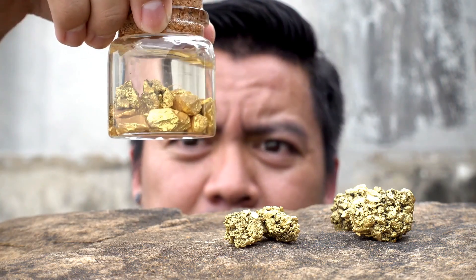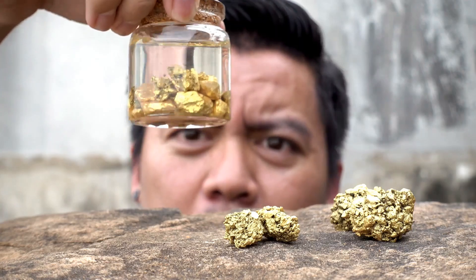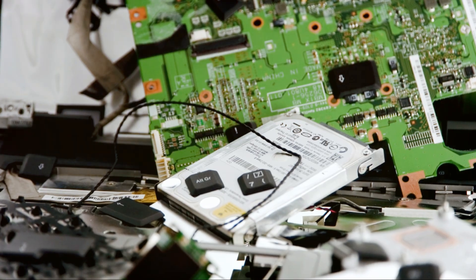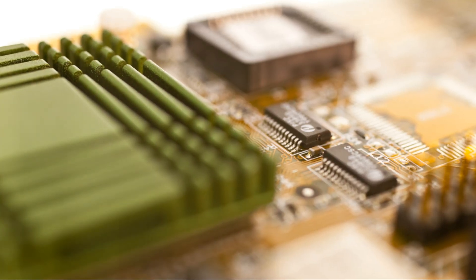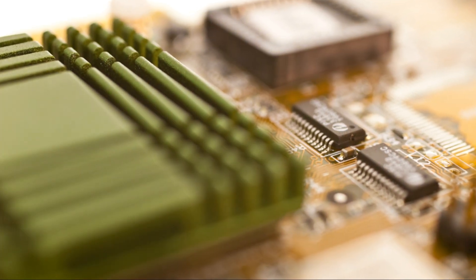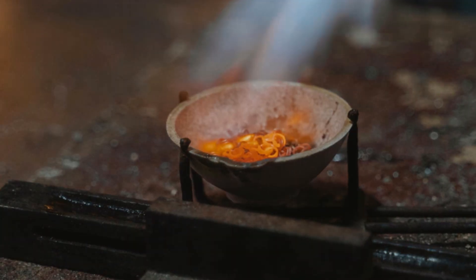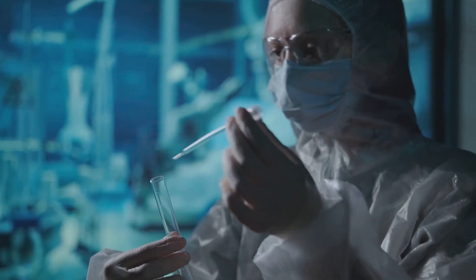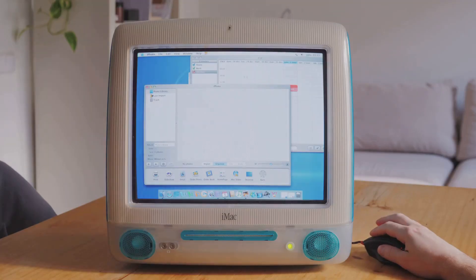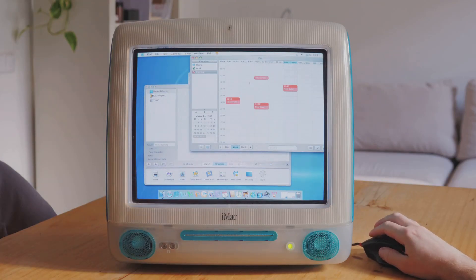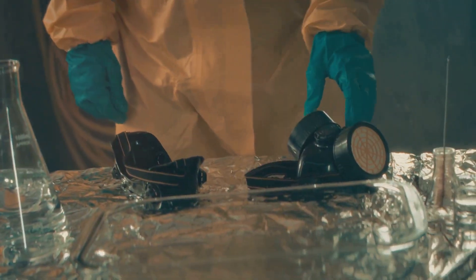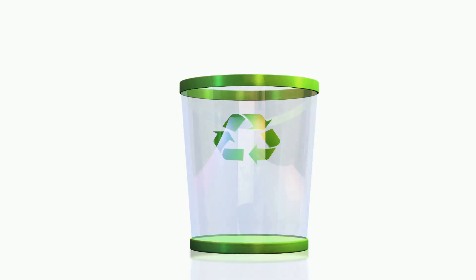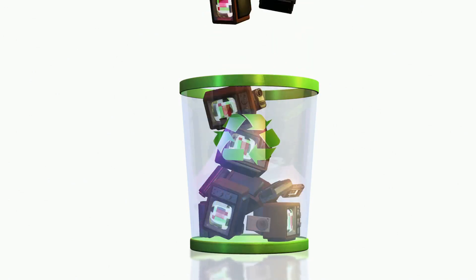A golden recap: summary and environmental considerations. We've done it! We've successfully journeyed through the fascinating process of recovering gold from old electronics, from disassembling devices to dissolving, precipitating, and finally melting the gold. We've witnessed firsthand the transformation of e-waste into a precious metal. Remember, while this process can be rewarding, it's crucial to prioritize safety and environmental responsibility at every step. Always wear proper safety gear, handle chemicals with extreme care, and dispose of waste materials responsibly following local regulations.